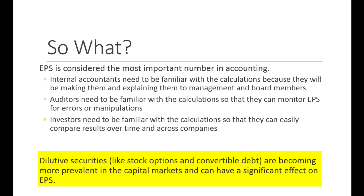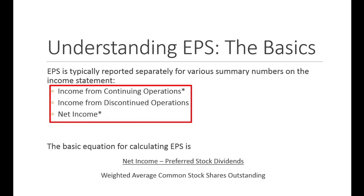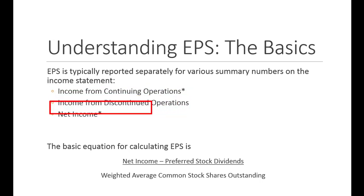Earnings per share is one of the essential pieces of the financial statements. It must be included for your income statement to be in good form — acceptable to FASB, the SEC, banks, etc. If you omit earnings per share, you are not following GAAP. We usually report at least two earnings per share numbers. The three typically calculated are: earnings per share on income from continuing operations, earnings per share on income from discontinued operations, and earnings per share on net income.